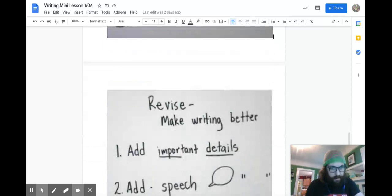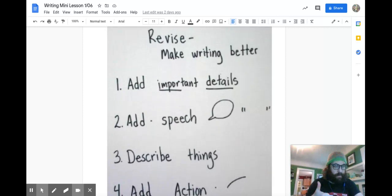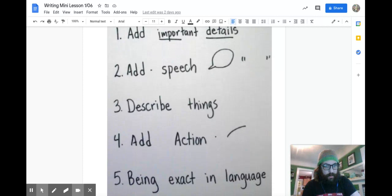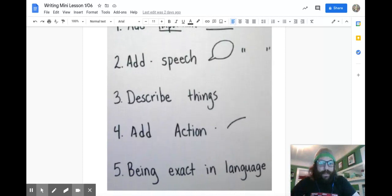And this was our first list of things that we thought we could do to make our writing better. So we said we could add important details, super cool. We could add speech, either a speech bubble or some dialogue. We could describe things, get better descriptive language. We could add action. And this line right here is to remind me of how Mo Willems does that. And then we could be exact in language.